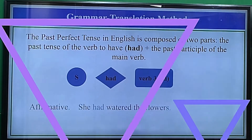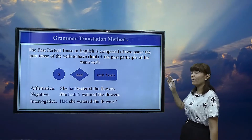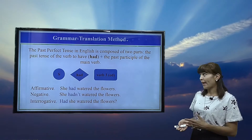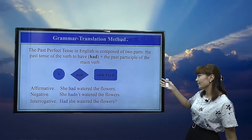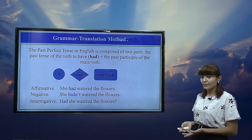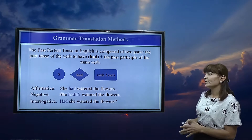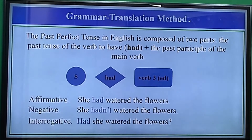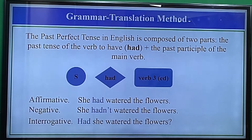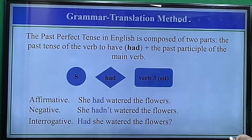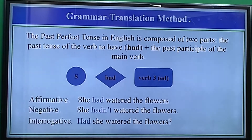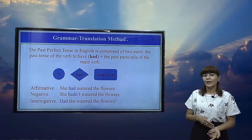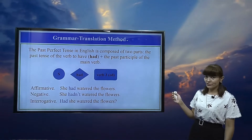As an example for the grammar translation method, consider the past perfect tense in English. It is composed of two parts: the past tense of the verb 'have' (had) plus the past participle of the main verb. The formula is: subject + had + verb 3. For example, the affirmative sentence is 'She had watered the flowers,' the negative is 'She had not watered the flowers,' and the interrogative is formed by putting the auxiliary verb before the subject: 'Had she watered the flowers?'